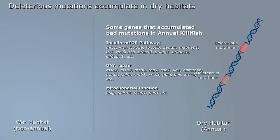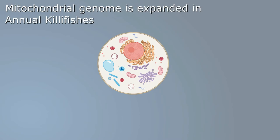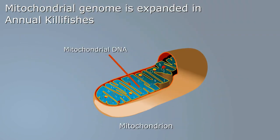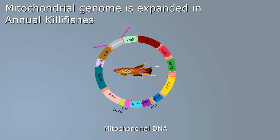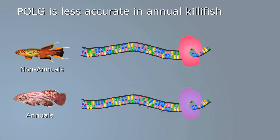Some of these affected genes are well known to be key regulators of lifespan. Polymerase gamma is one of these. Polymerase gamma replicates mitochondrial DNA, and its mutations can accelerate aging. We found that six mutations in the polymerase gamma gene of the annual killifish make the mitochondrial genome highly unstable, and could contribute to the short lifespan and rapid aging of annual killifish.